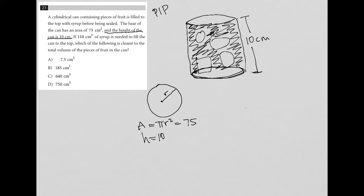The best way to solve this is to figure out the total volume of the can itself, and then subtract the volume of the syrup. So basically, how much total space is inside the can minus how much was taken up by syrup. What we get left over should be the volume of the fruit.